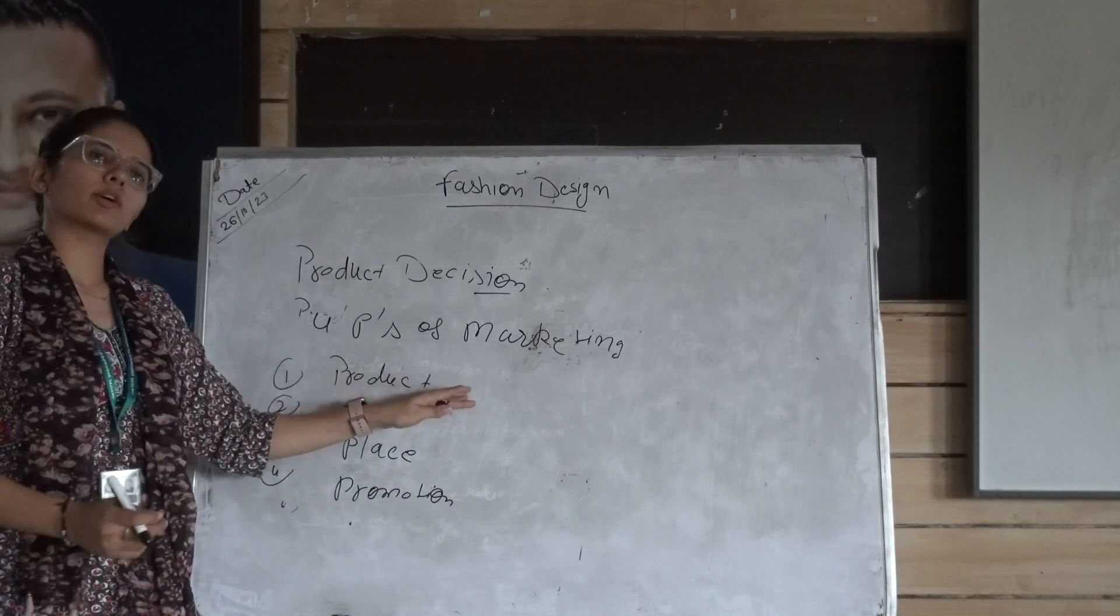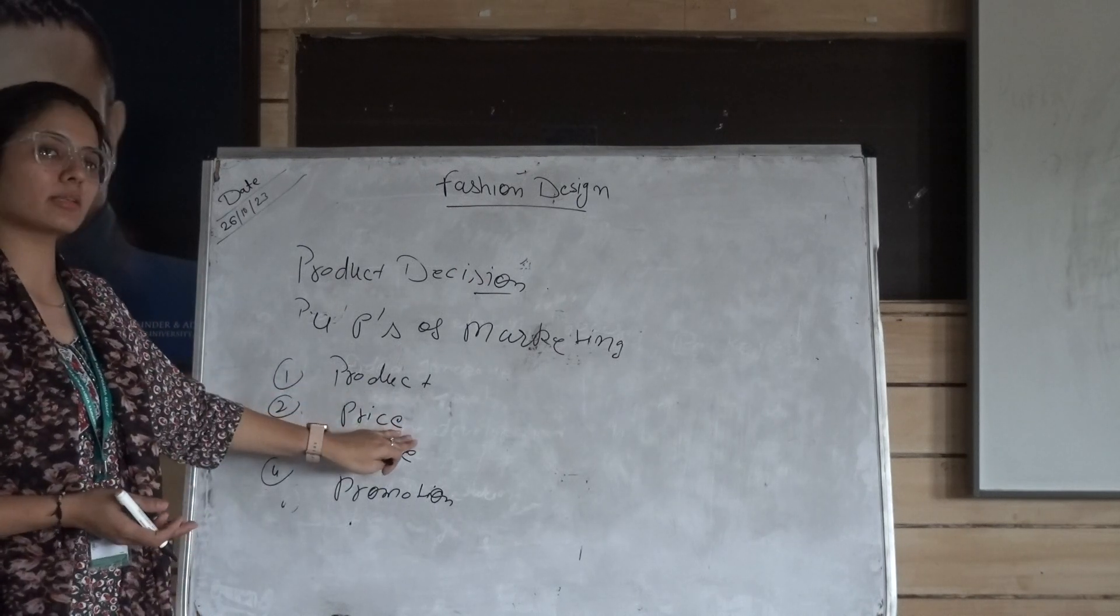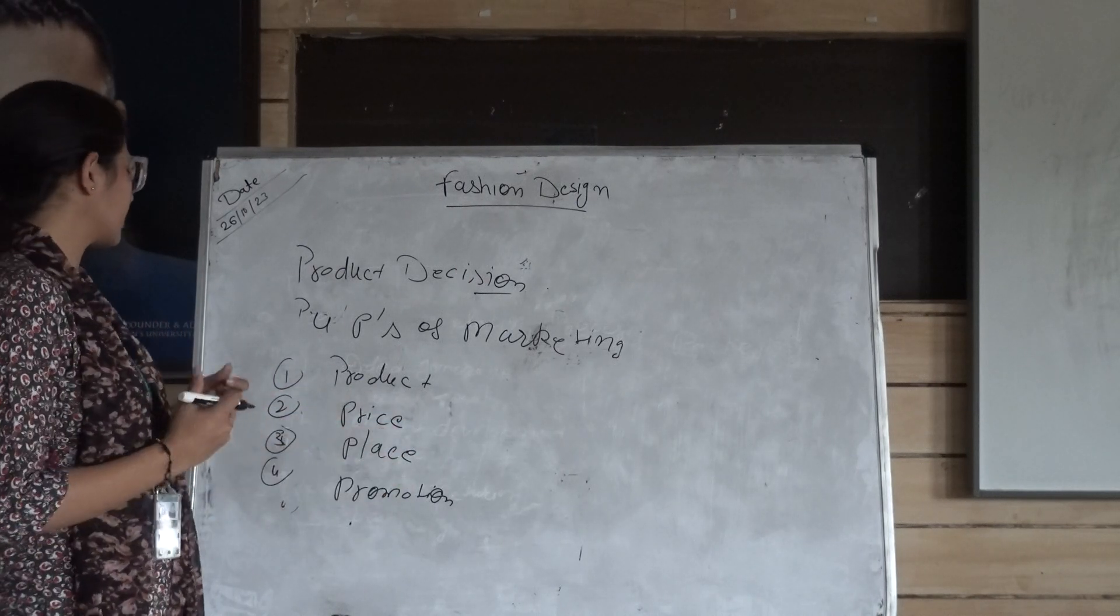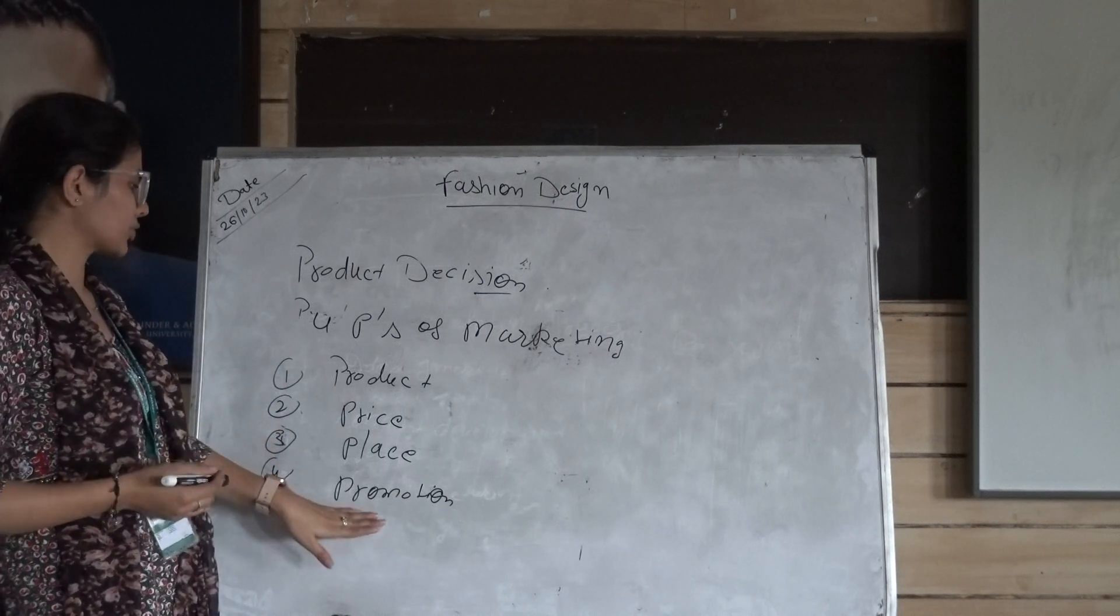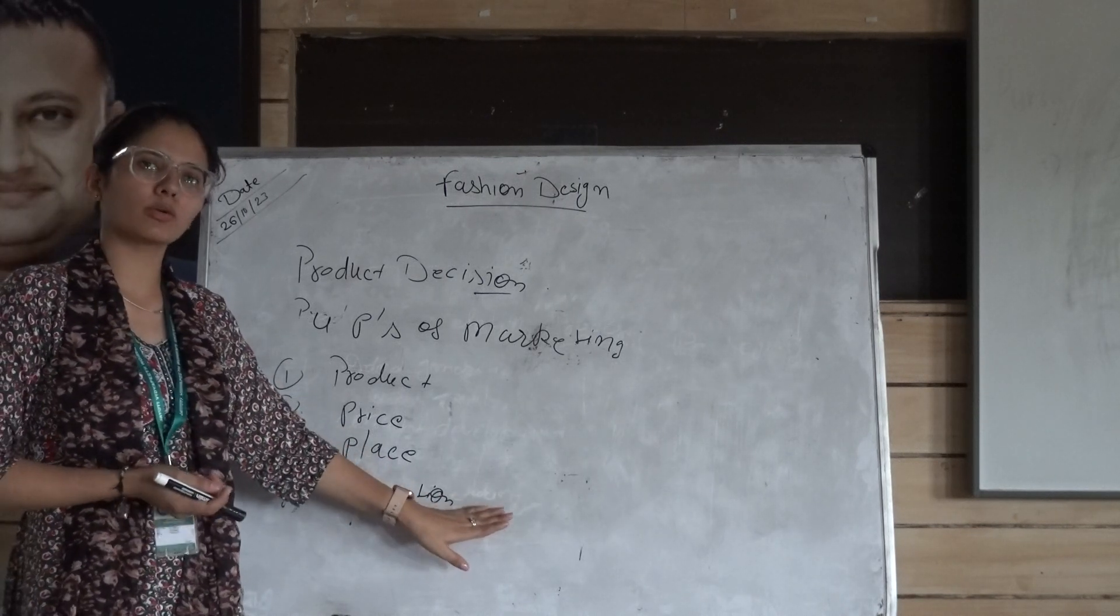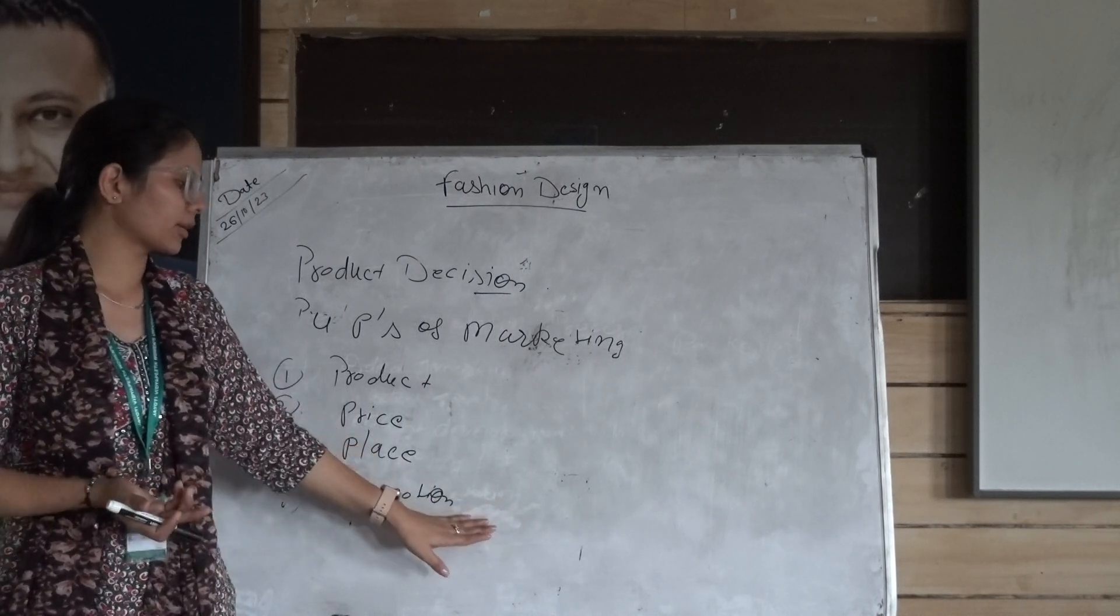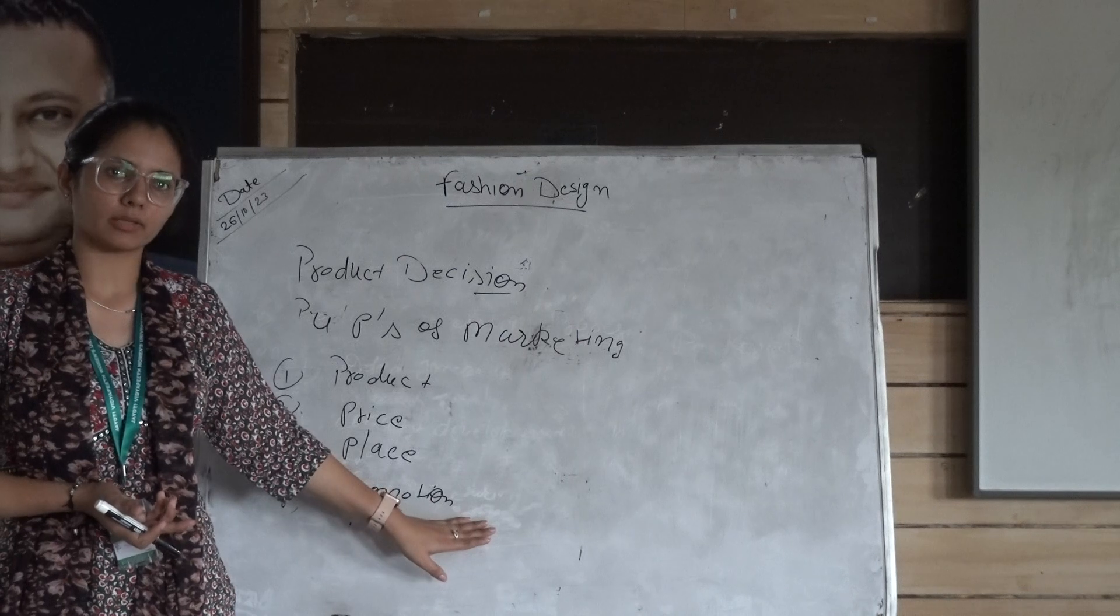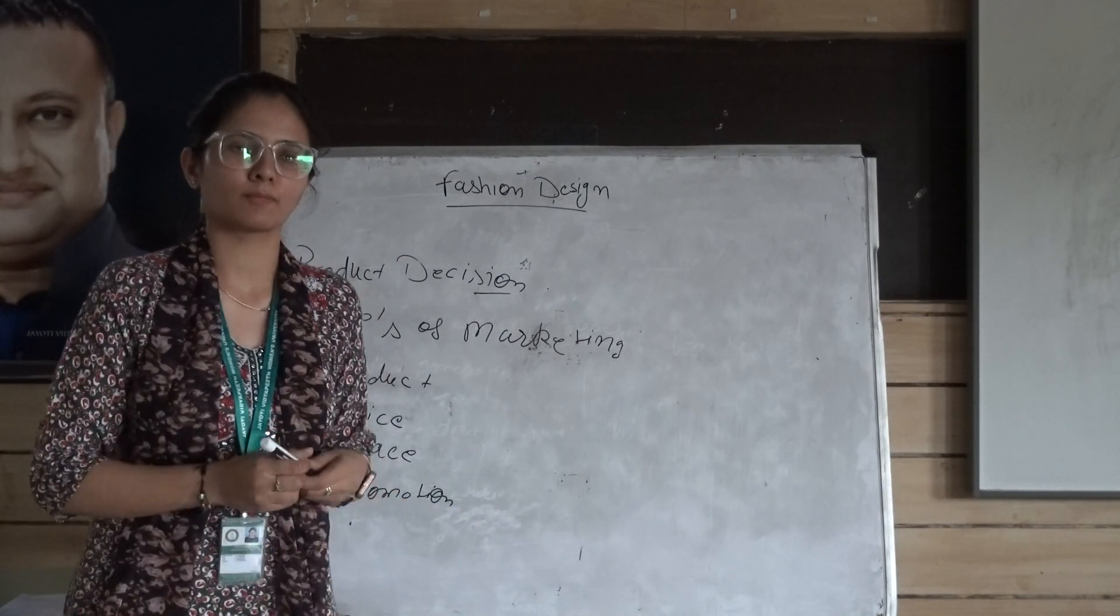Product is what we are going to launch. Pricing is the price we set. Place refers to where we are going to sell our product, like in offline or online mode. And promotion refers to which kind of activity we are going to use to promote our product, like advertising. Sometimes we can use offline method or online method. So these are the four P's of marketing. Thank you.